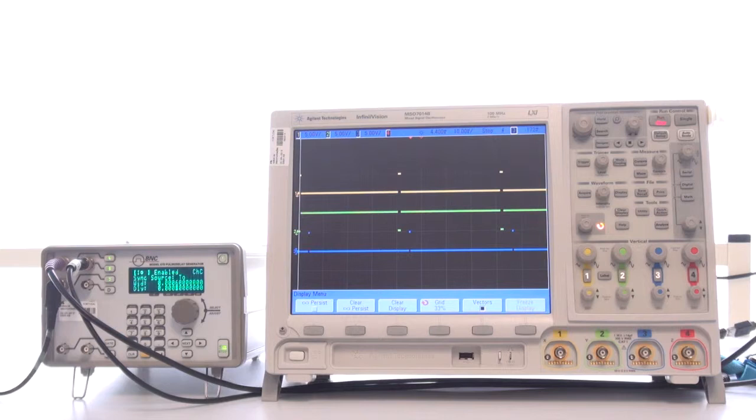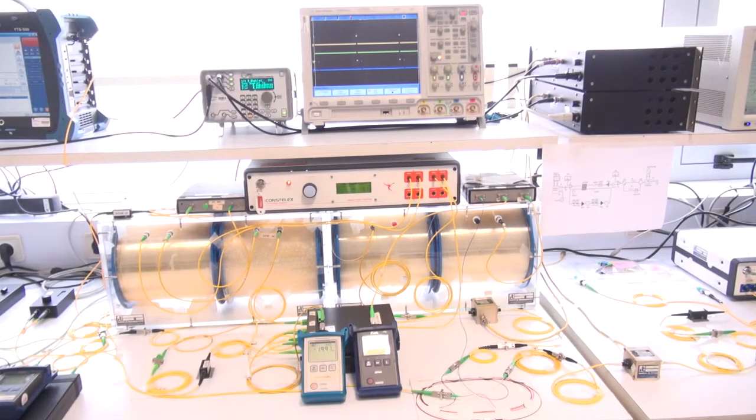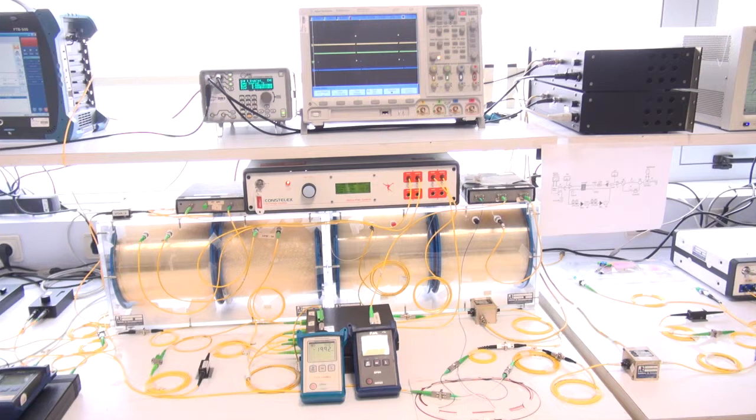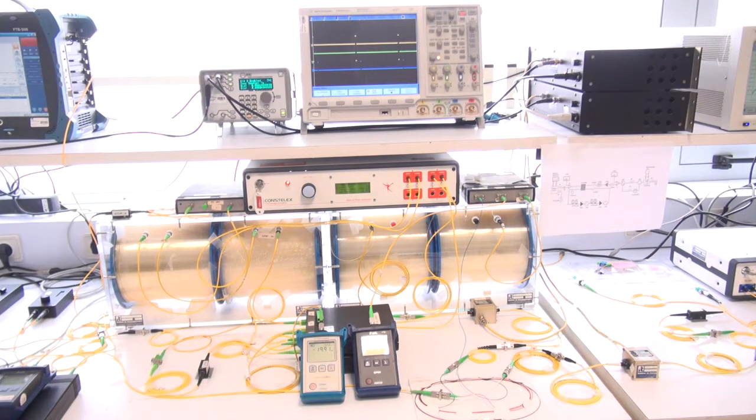The round-trip time is the time that the optical signal takes to travel through the fiber spans within the loop. Basically, we have three fundamental operation states: loading state, looping state, and trigger state.